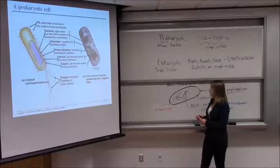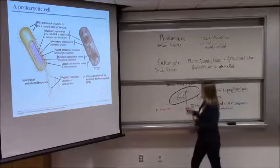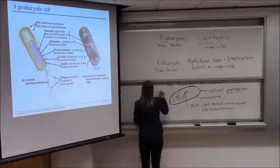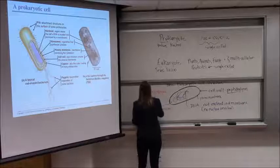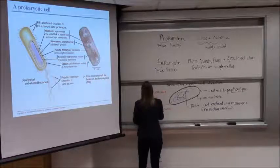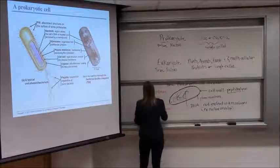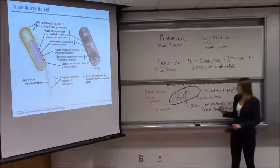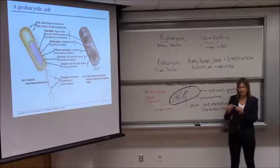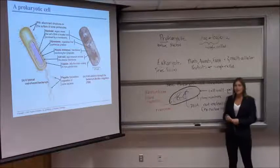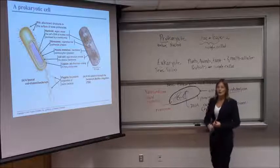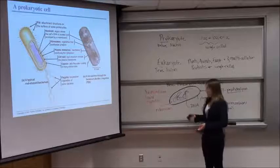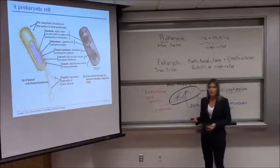Prokaryotic cells do not have any membrane-bound organelles. They just have ribosomes, and the DNA is free in the cytoplasm — not protected in a nuclear envelope. Eukaryotic cells, on the other hand, are much more complex: they do have membrane-bound organelles, and the DNA is protected in a nuclear envelope. That's what we're going to spend the rest of this lecture talking about.